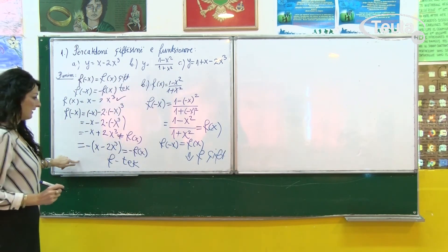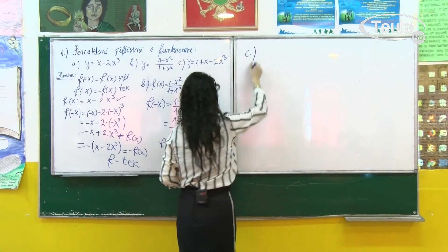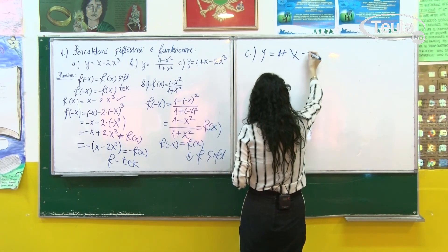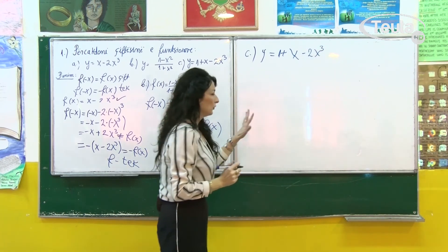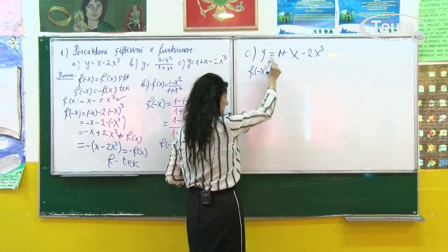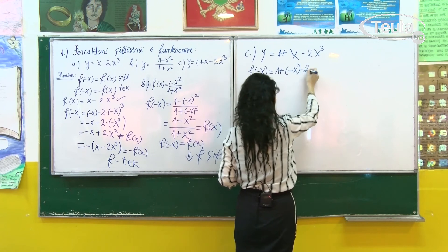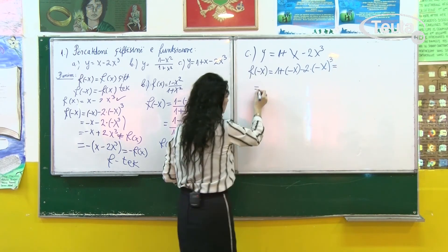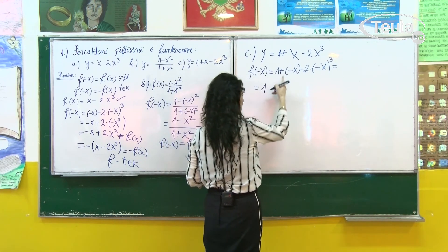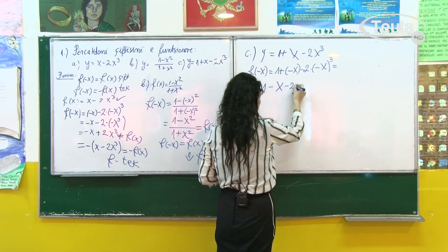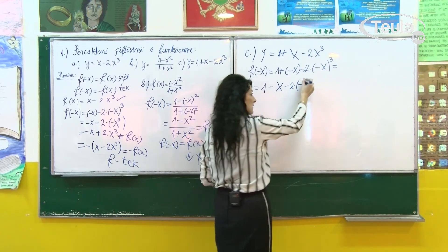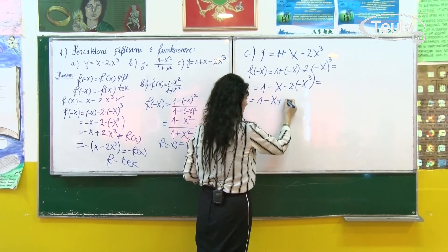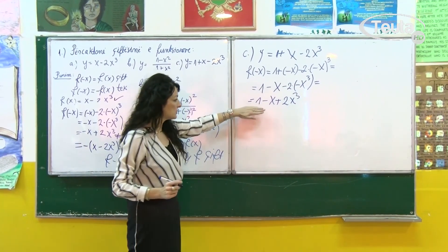Pra kemi parë rastin e funksionit tek dhe funksionit qift. Tani do të vazhdojmë shembullin e tretë — bëhet fjalë për një trinom: y = 1 + x - 2x³. Në mënyrë të njëjtë fillojmë me f(-x) dhe zëvendësojmë: 1 + (-x) - 2·(-x)³. Atëherë, të lirohemi duke shumëzuar nga shenja: plus e minus japin minus, kemi 1 - x; minus 2 herë, dhe (-x)³: minusi mbetet sepse eksponenti është tek, dhe kemi -2x³. Pra kemi fituar: 1 - x + 2x³.